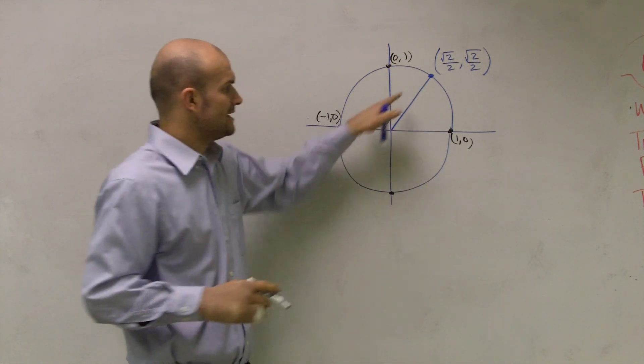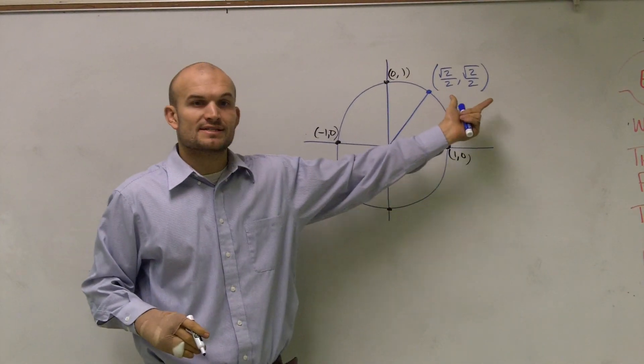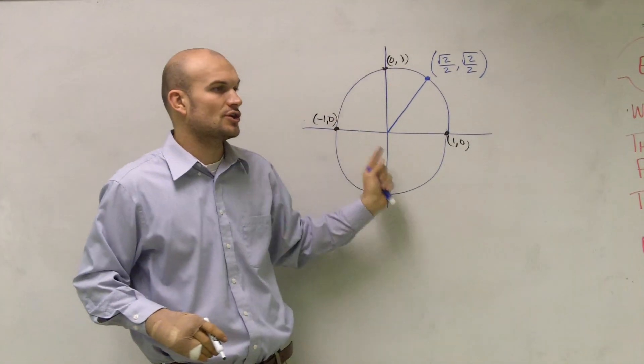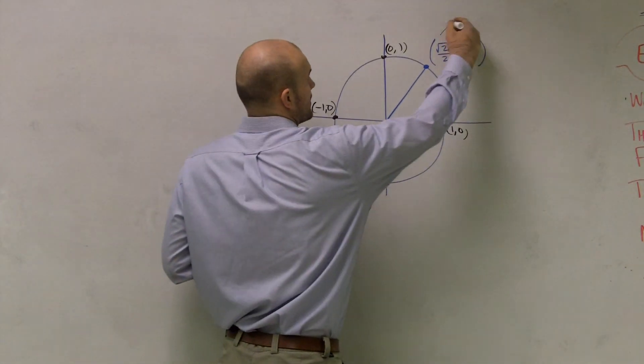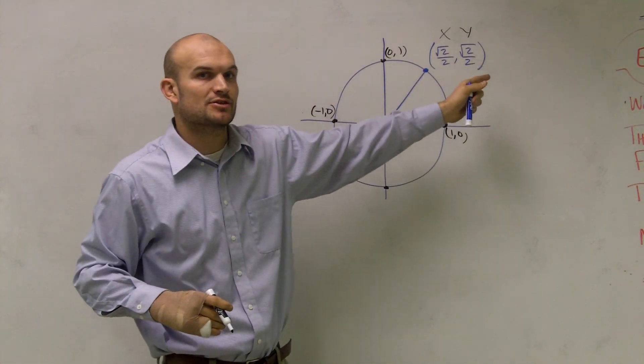So if I'm given a point T, we have our coordinates for certain points T on our unit circle. We know what our x and y coordinates are, and I want to show you how I know my x and y coordinates by using my special triangles.